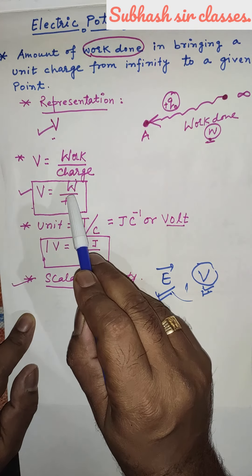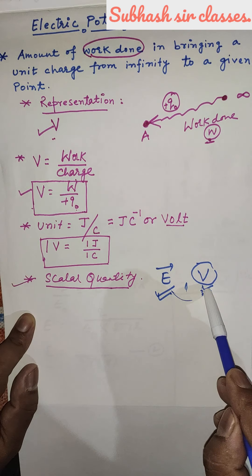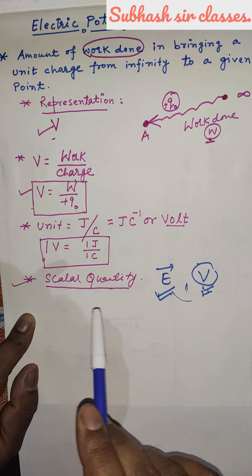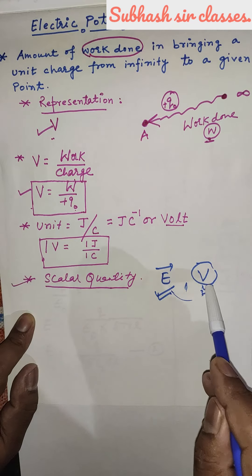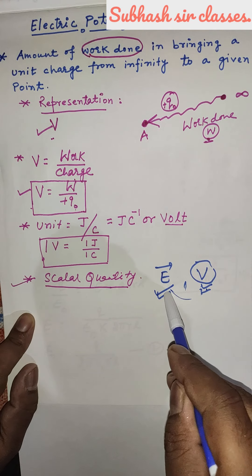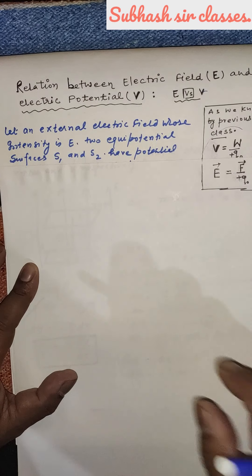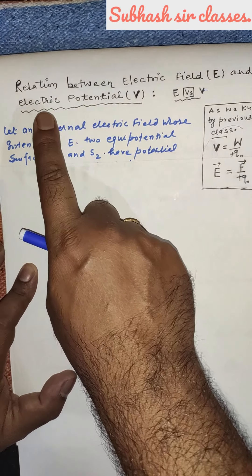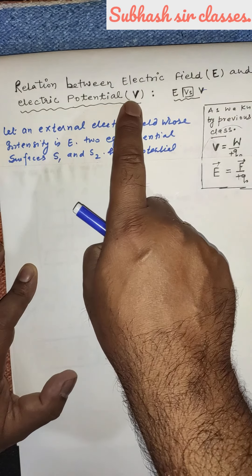Electric field intensity and electric potential — these are the basic formulas. Now in this class, we are going to discuss the relationship between E and V, the electric field intensity and electric potential.